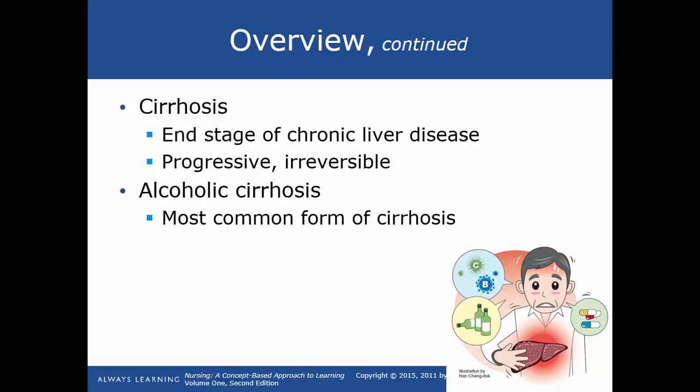Cirrhosis is the end stage of chronic liver disease. It is progressive, irreversible, and eventually leads to liver failure. Alcoholic cirrhosis is the most common form in North America. It can also result from chronic hepatitis B or C, prolonged obstruction of the biliary system, or long-term severe right-sided heart failure.